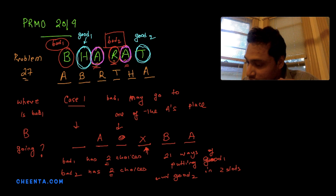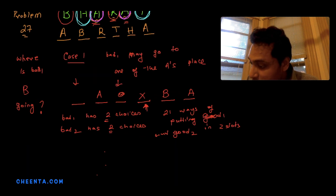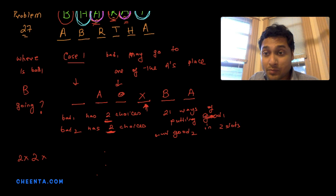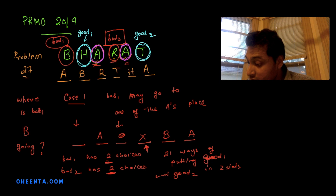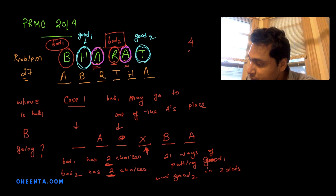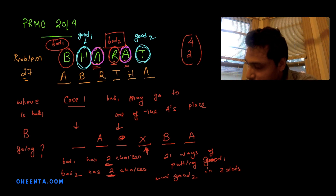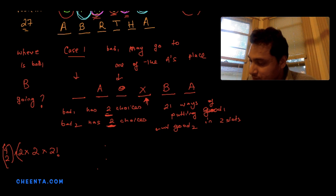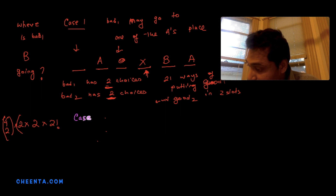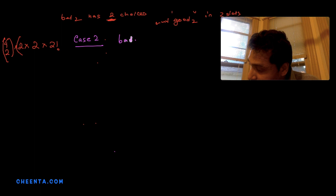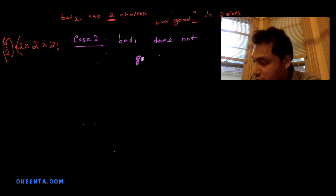So for Case 1, the total is C(4,2) × 8. Now let's consider Case 2: Bad 1 does NOT go to one of the A's positions.